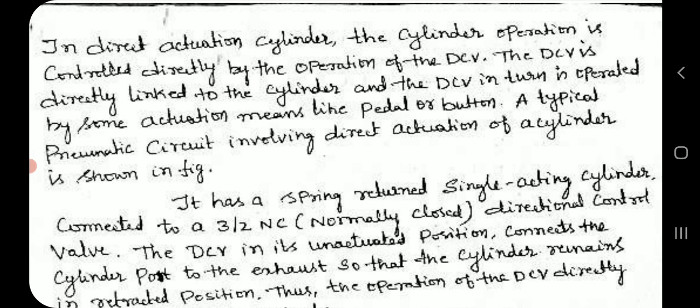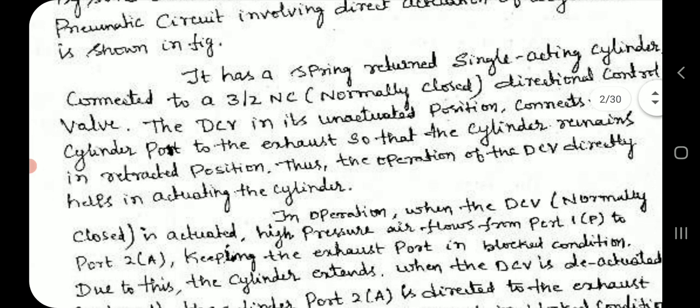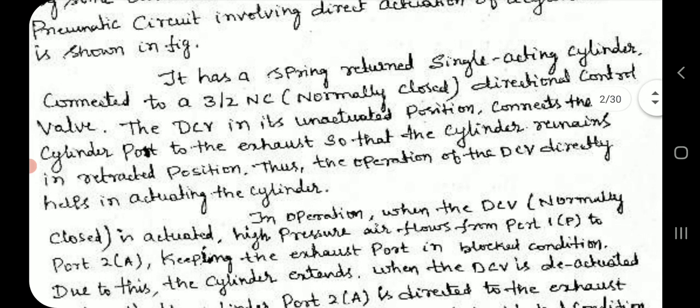The circuit has a spring-returned single-acting cylinder connected to a 3/2 normally closed directional control valve. In its unactuated position, the directional control valve connects the cylinder port to the exhaust port so that the cylinder remains in the retracted position. Thus, the operation of the directional control valve directly helps in actuating the cylinder.